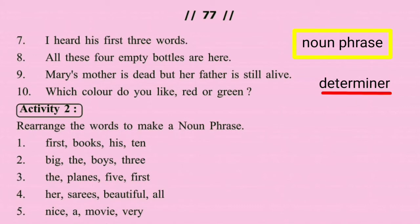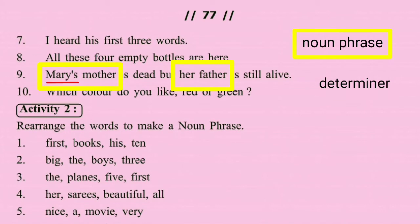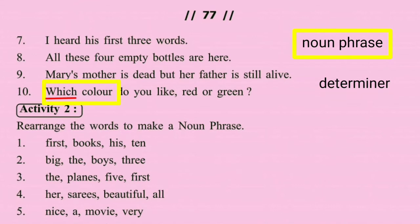Mary's mother is dead but her father is still alive. 'Mary's mother' is a noun phrase with 'Mary's' as a possessive determiner. 'Her father' is another noun phrase with 'her' as a possessive determiner. Which color do you like — red or green? 'Which color' is a noun phrase with 'which' as a wh-word determiner.